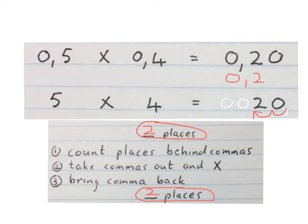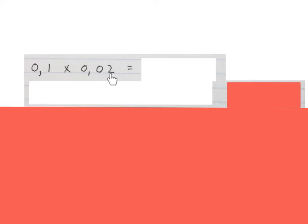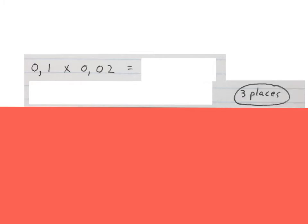Please stop the video and try to understand how we use these three steps. Let's do two more and see how little writing we can do. They gave us 0,1 times 0,02. Firstly, we count the places behind the comma — there are two places in 0,02 and one more in 0,1, that's three places in total. We write down three places and circle it.